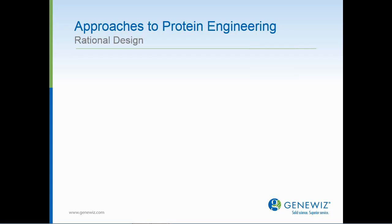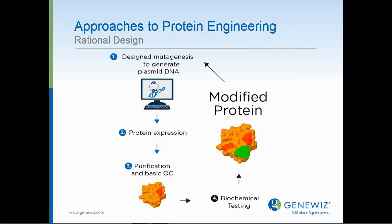Let's begin with rational design. In this process, one relies heavily on the knowledge of the protein structure and function, and can be summarized by these four basic steps: mutagenesis, protein expression, purification and basic QC steps, and finally, biochemical testing.